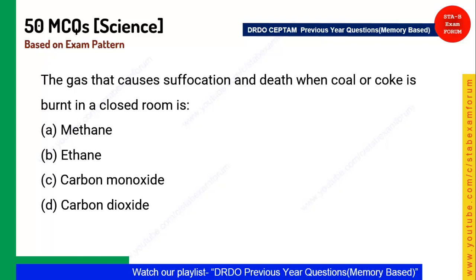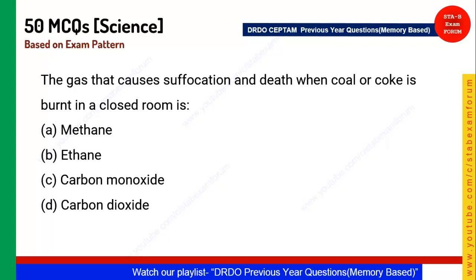Next question: Which gas causes suffocation and death when coal is burnt in a closed room? The answer is carbon monoxide. Carbon monoxide is very harmful to our lungs. Although carbon dioxide is also produced, the maximum harmful content is carbon monoxide, resulting from partial combustion.